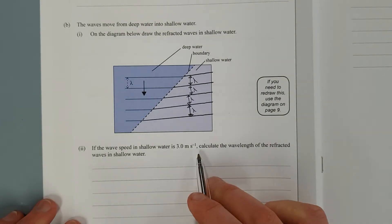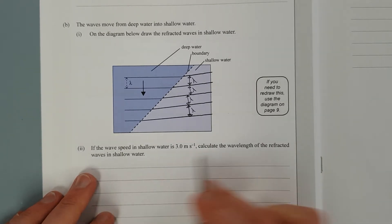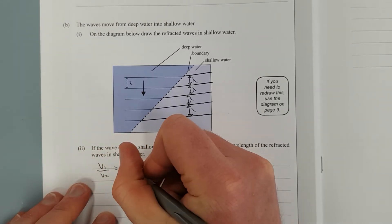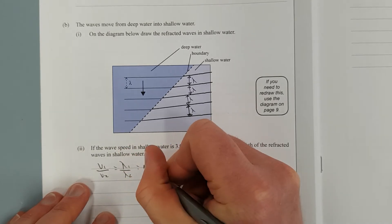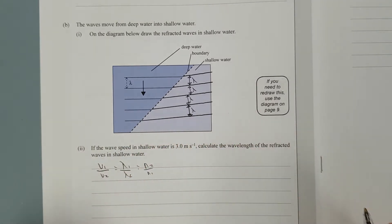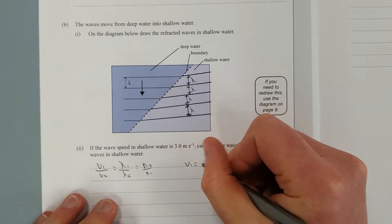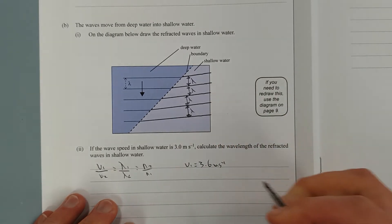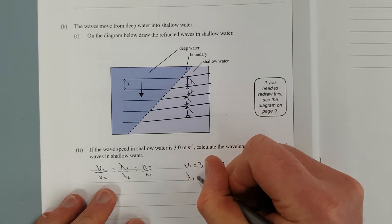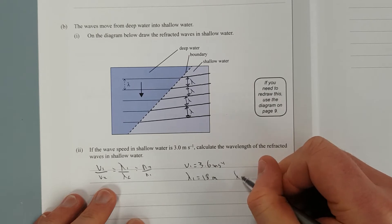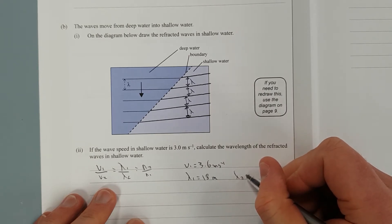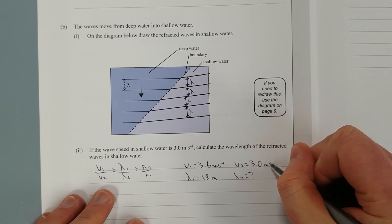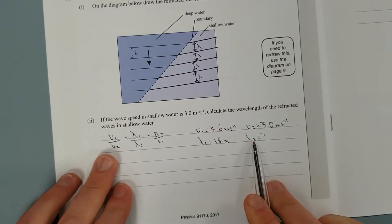If the wave speed in the shallow water is 3 metres per second, calculate the wavelengths of the refracted waves in the shallow water. So in your formula sheet, you'll have V1 over V2 is equal to lambda 1 over lambda 2, which is also equal to N2 over N1, if I remember rightly. So we have V1 is equal to 3.6 metres per second. We calculated it in the first question. Lambda 1, they told you, is 18 metres. Lambda 2 is what I'm trying to find, and V2 is equal to 3 metres per second.